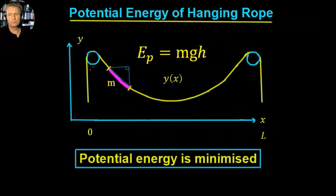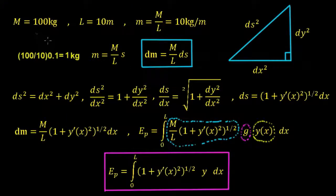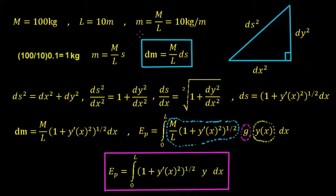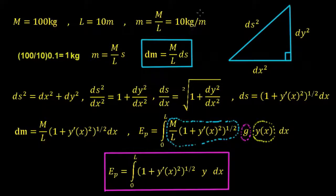Let's go ahead and do this Pythagoras theorem with infinitesimal values. Imagine the rope weighs 100 kilograms — that's the total mass M — and the entire length of the rope is 10 meters, that's L. We can say that the small m, mass per unit length, equals the large M divided by L. So 100 kilograms divided by 10 meters gives us 10 kilograms per meter.